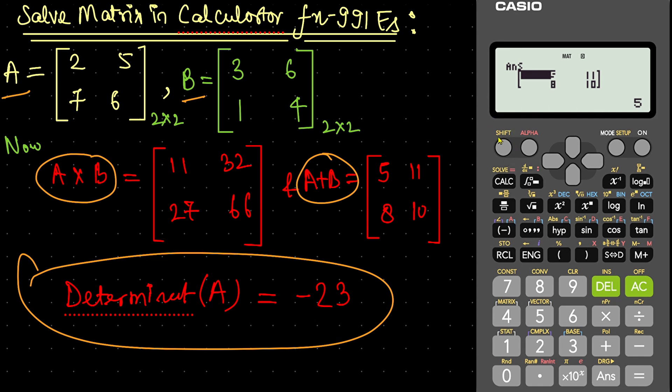Now, if you want to calculate determinant, you can do that too. Press again shift. Matrix. We have to calculate determinant which is on 7. D, E, T. 7. Now, again press shift. Matrix. Matrix of A, which is on 3. Press 3. Now, press equal. It is minus 23.